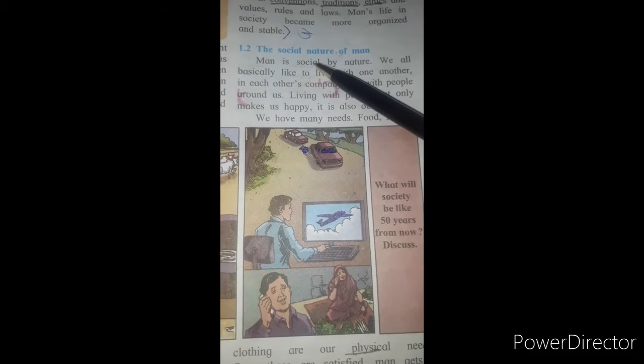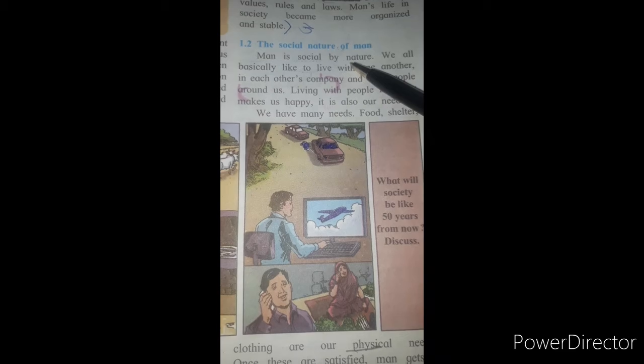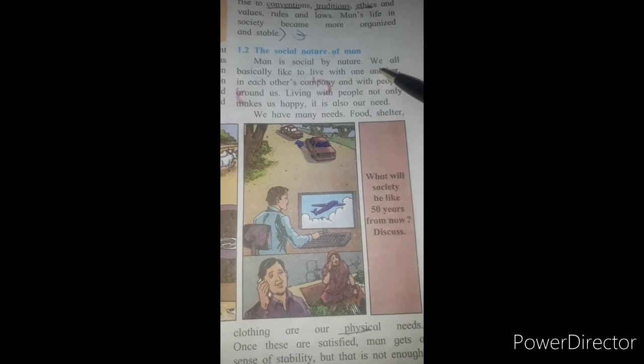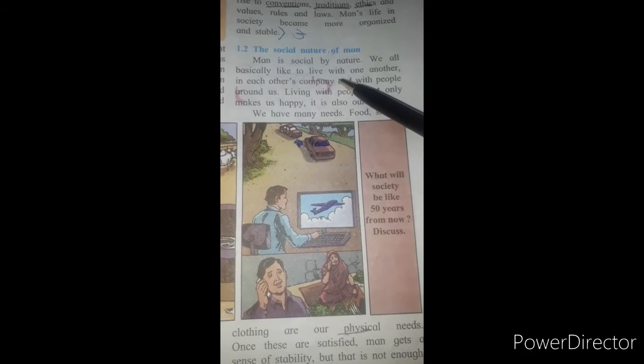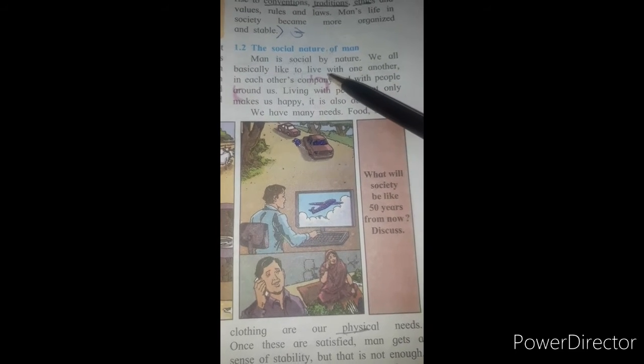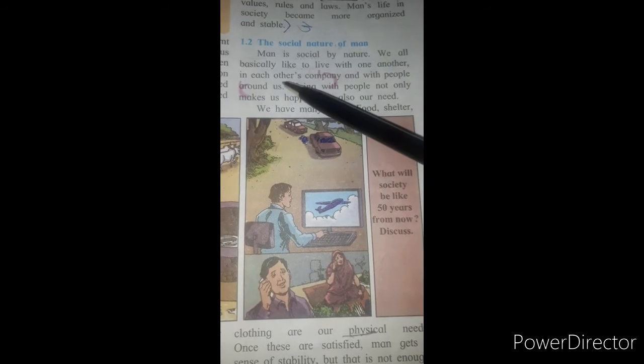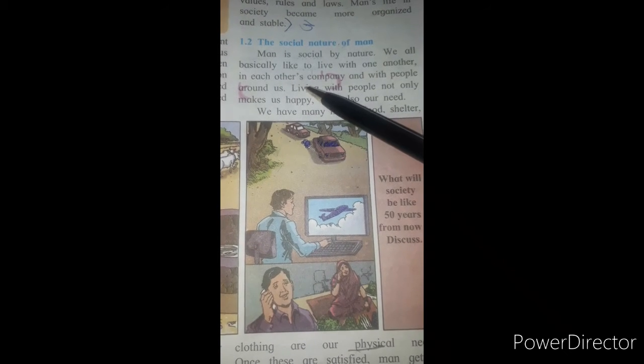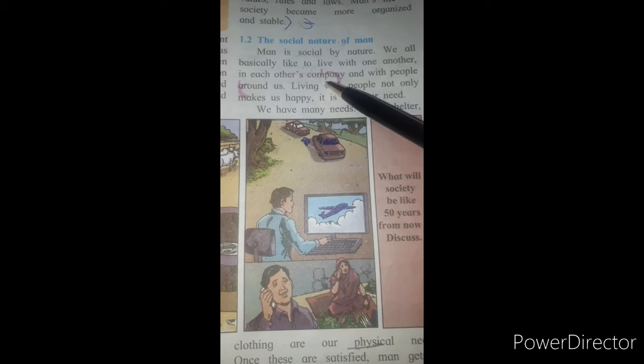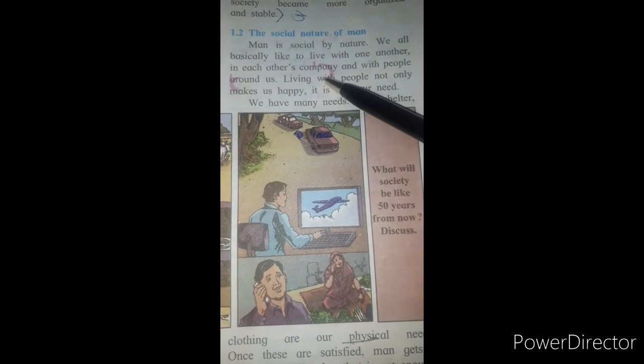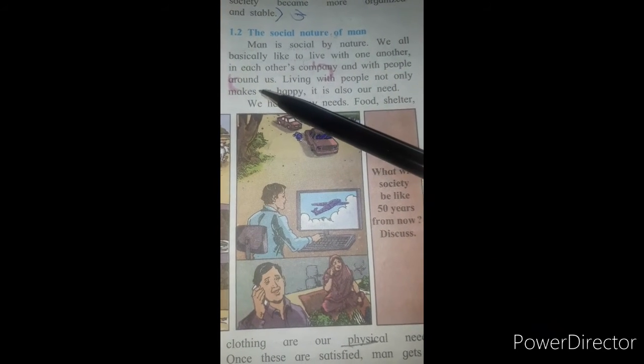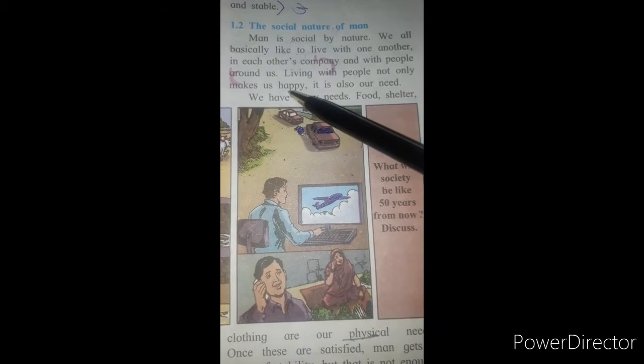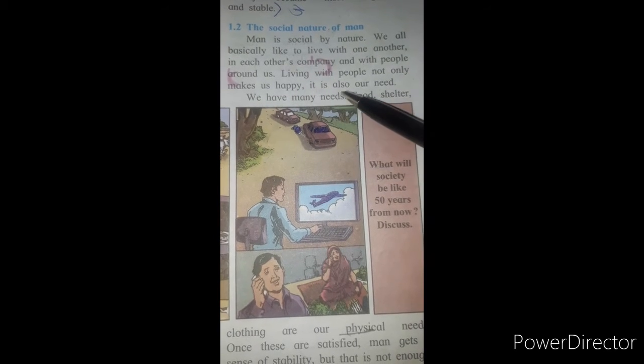The social nature of man is social by nature. We all basically like to live with one another. How is our social life? We like to live with one another, in each other's company. Like you also like your friend's company. You like to stay with your friend. You like to enjoy with your friends and with people around us. Living with people not only makes us happy. These things make us happy. It is also our need.